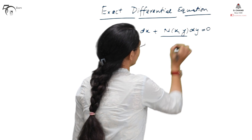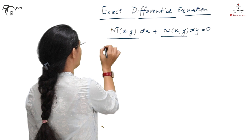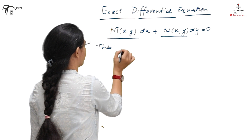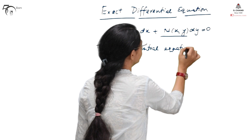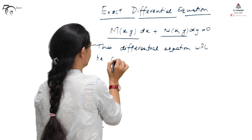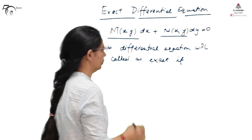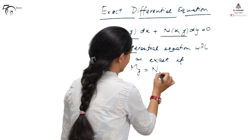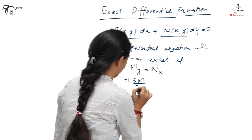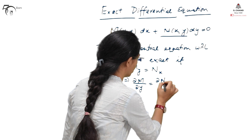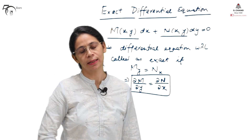Here M(x,y) and N(x,y) are functions of x and y respectively. This differential equation will be called exact if M_y equals N_x — that is, the subscript stands for the derivative. In other words, the partial derivative of M with respect to y is equal to the partial derivative of N with respect to x.